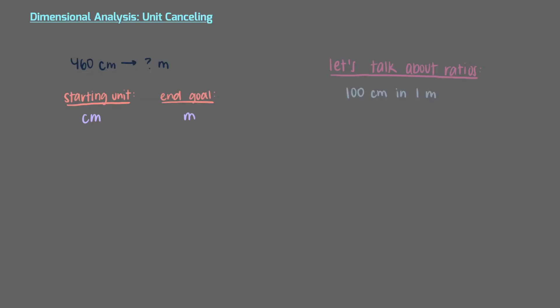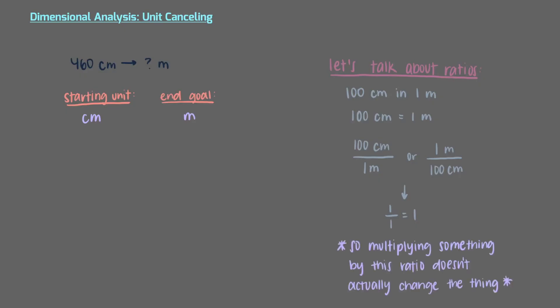There are 100 centimeters in 1 meter. This means that these two values, 100 centimeters and 1 meter, are equal. When we express this as a ratio, we can either express it as 100 centimeters over 1 meter, or 1 meter over 100 centimeters. Because 100 centimeters is equal to 1 meter, this ratio is actually like saying 1 over 1, which is equal to 1, no matter which way you write it. So we can multiply something by this ratio and not actually change the thing, because anything multiplied by 1 is just itself.